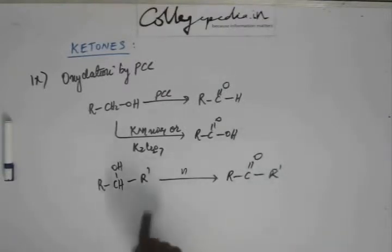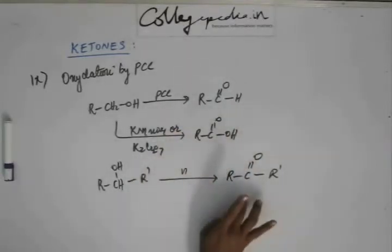So if you have a 1 degree alcohol, PCC will result in aldehyde. If we have a 2 degree alcohol, PCC will result in a ketone.